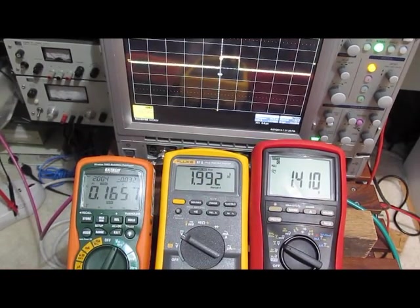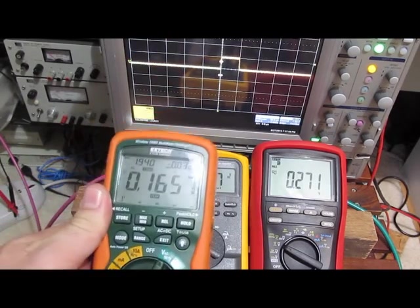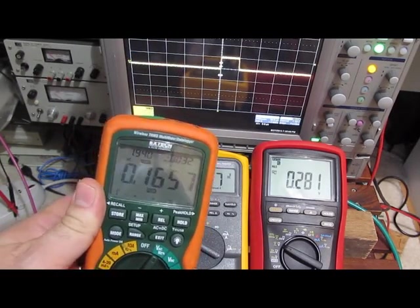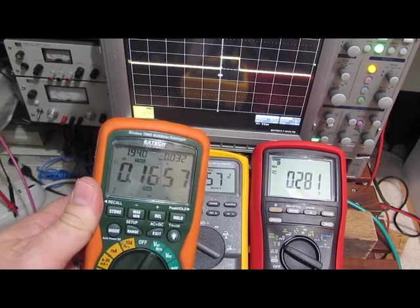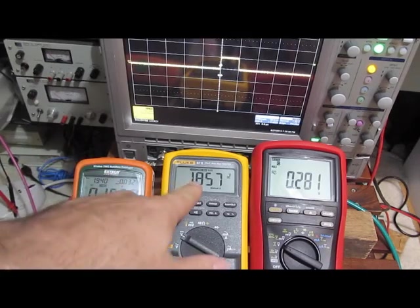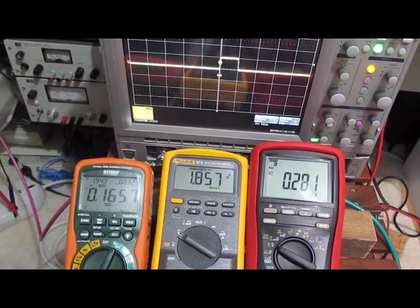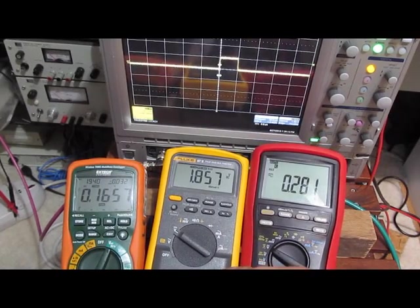So this is with a 50 microsecond pulse. The X-TEC is now 1.940. The Fluke, 1.857. And the Brymen now, 0.281.